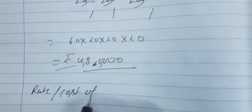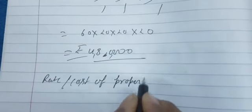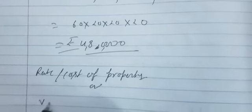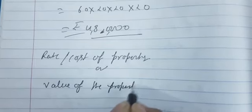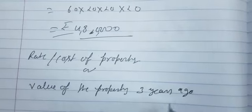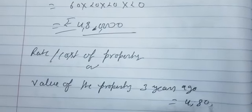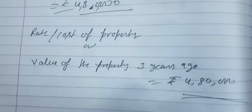So rate or cost of the property, or you may write value of the property three years ago, was four lakh 80,000 rupees, and now it is 4,11,540. So this is your answer.